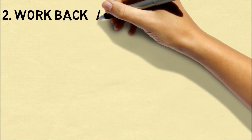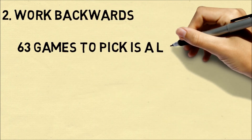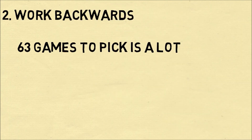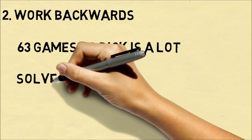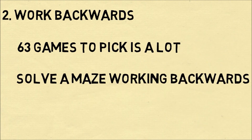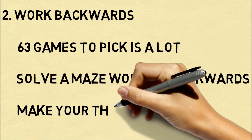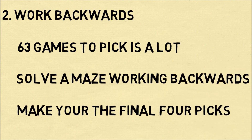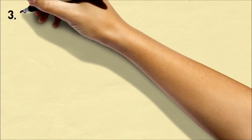Tip two: work backwards. The NCAA tournament has 64 teams, which means you need to pick 63 games — that's a lot of decisions. Just as you would solve a maze by looking at the end and going to the beginning, you can solve your bracket by picking your Final Four picks first. This will give you the most impact and will trim the number of decisions you have to make.